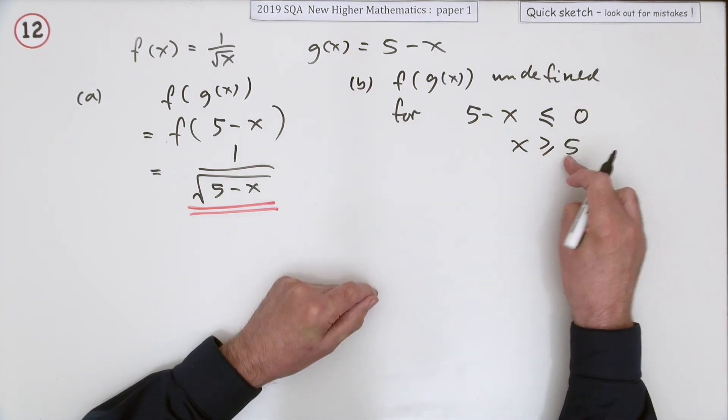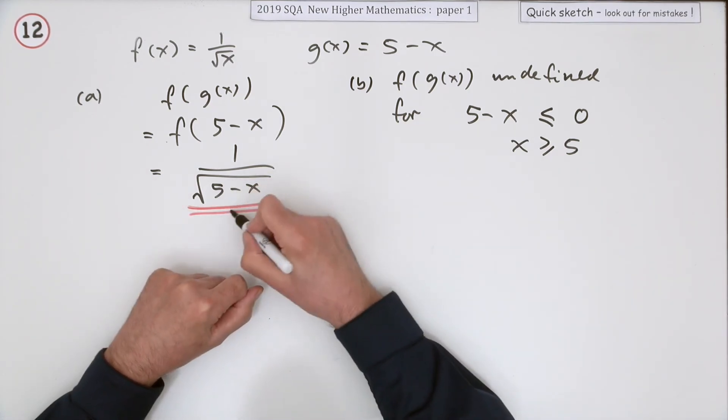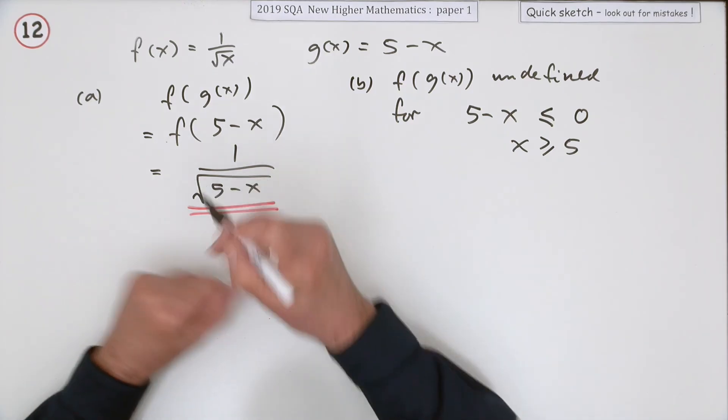If x is equal to 5 or more, you won't be able to get an answer to that calculation. If x is 5 it makes it 0, and if x is bigger than 5 it's worse than that, it goes negative.